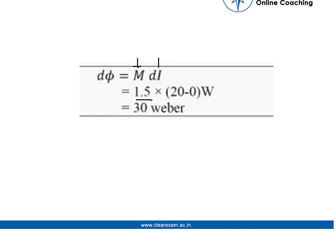And the change current is 0 to 20, so 20 minus 0 weber. So we got an answer that is 30 weber. The change of flux linkage is 30 weber.